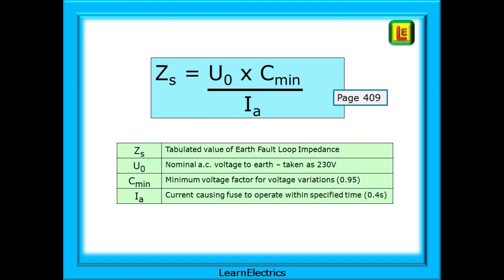On page 409 we find this equation. It's actually very easy to use and what the symbols mean is all explained on the same page. We want to know ZS, the tabulated value of earth fault loop impedance. To do that we will need to know U0, the nominal AC voltage to earth, which is taken as 230 volts for most UK installations. Cmin is the minimum voltage factor, an adjustment that the regulations want us to make to allow for voltage variations. And this is given as 0.95. And Ia is the information that we've just found in the response chart, the current and time data for the fuse in question. So, we're now ready to go.